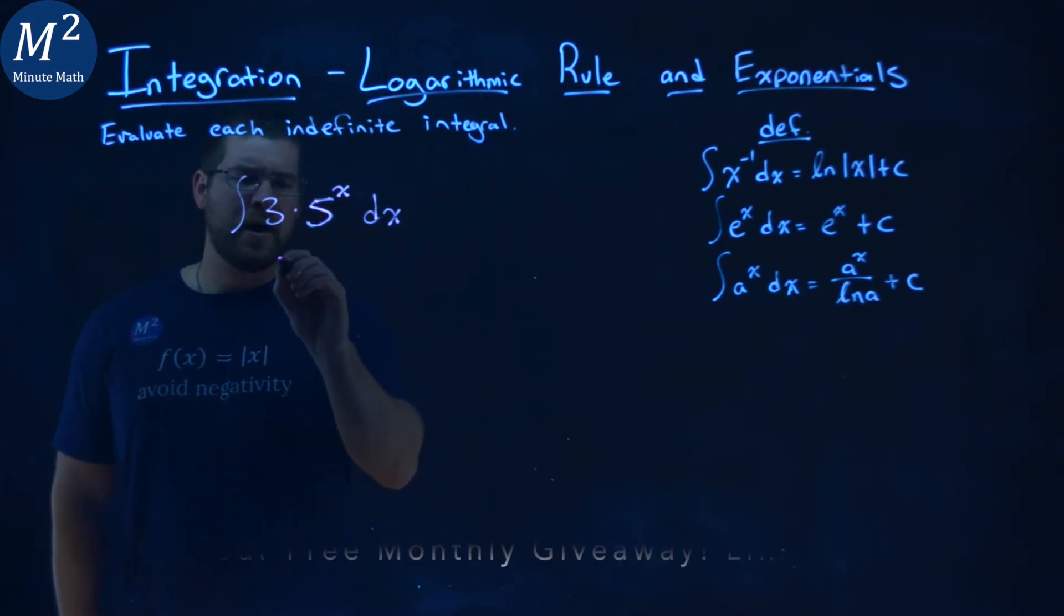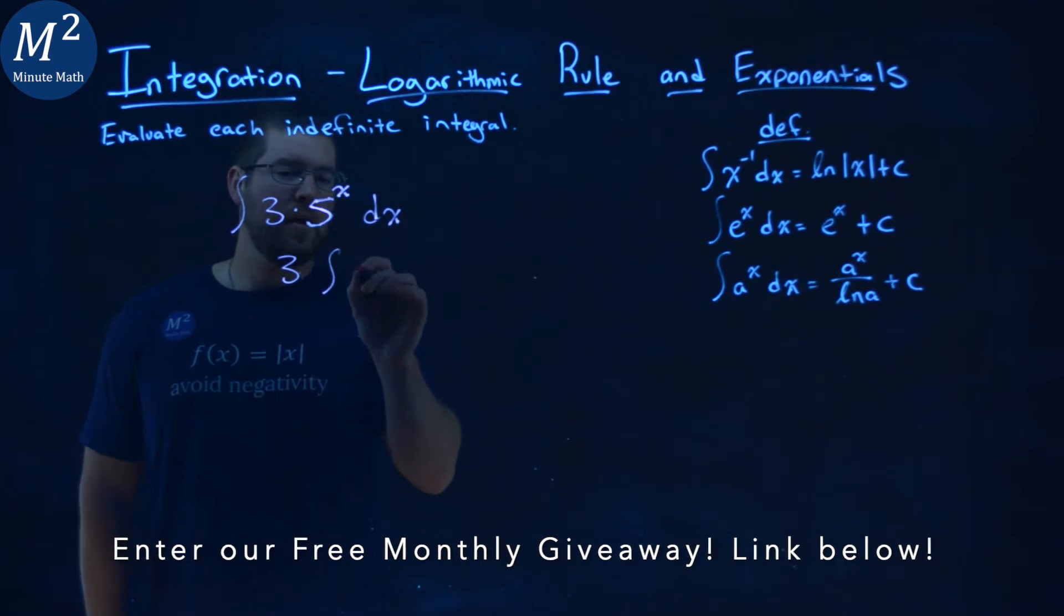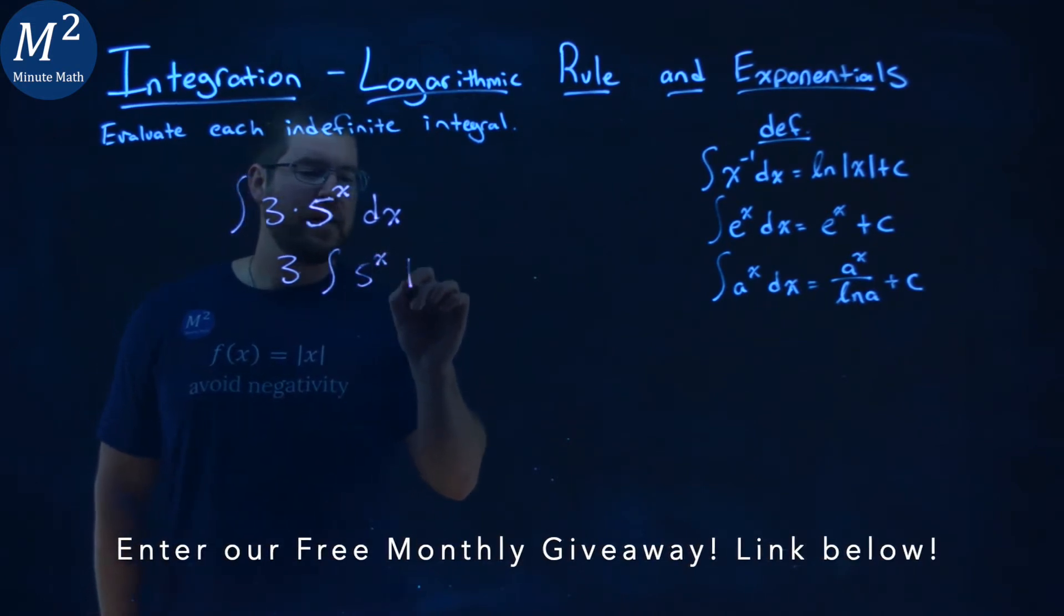So I pull that 3 out, I'm left with 3 times the integral of 5 to the x power dx.